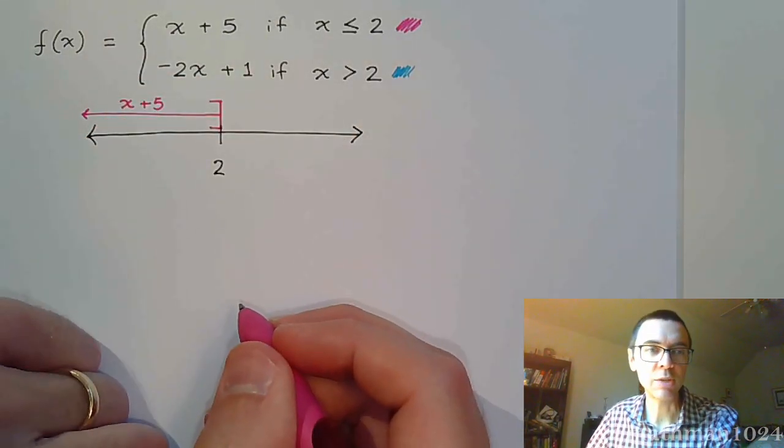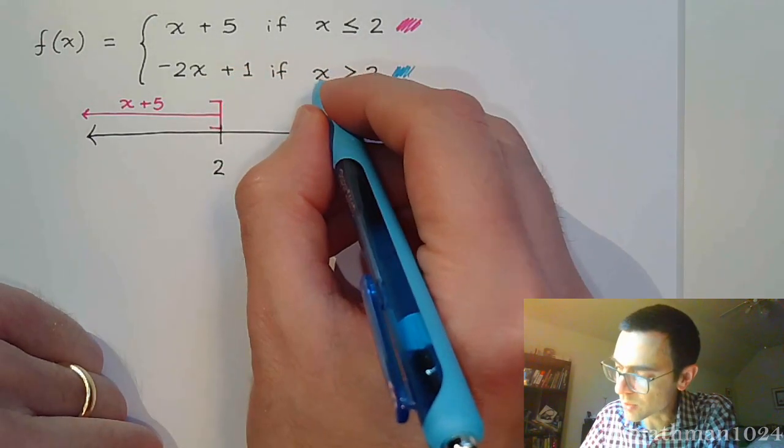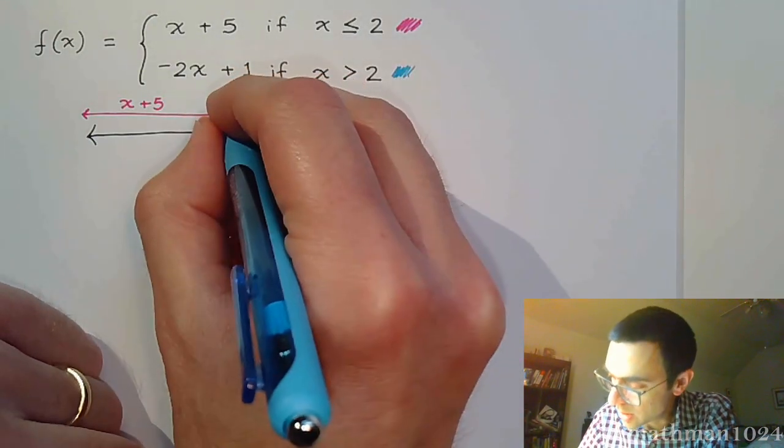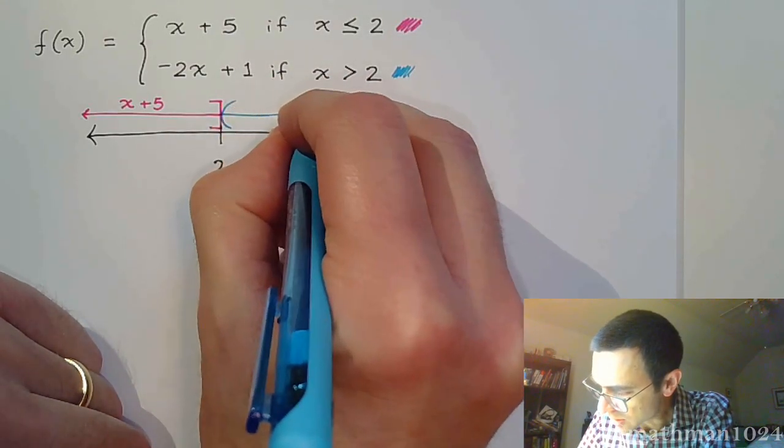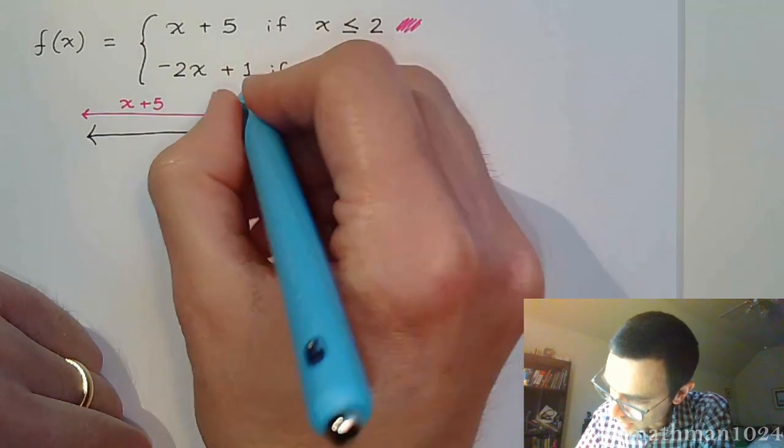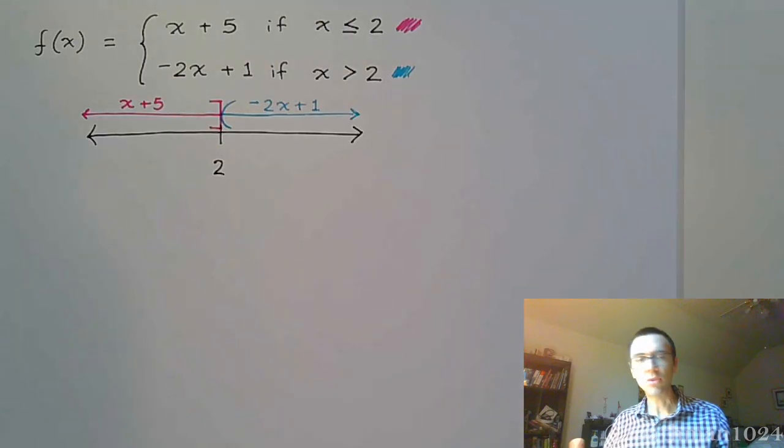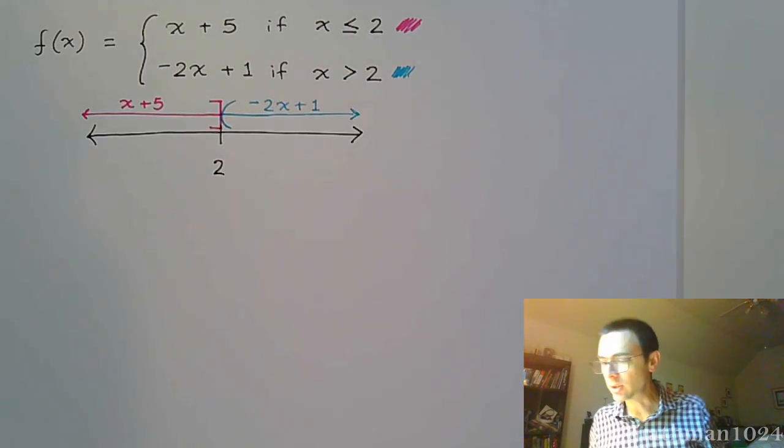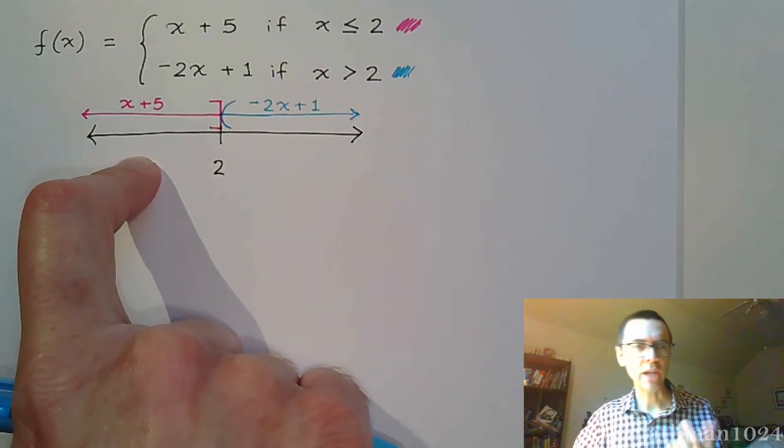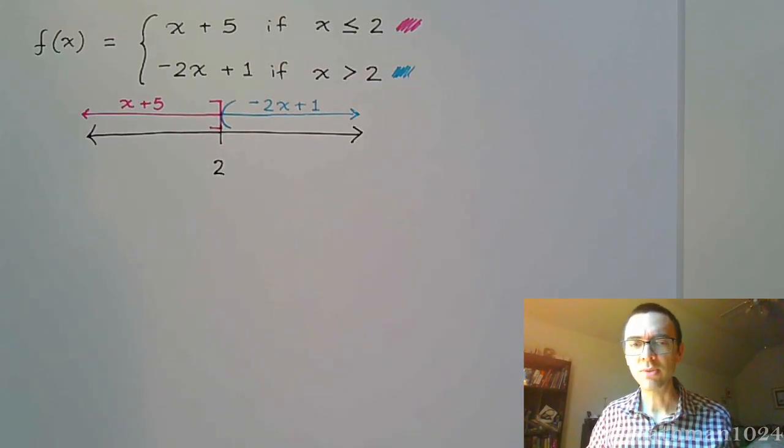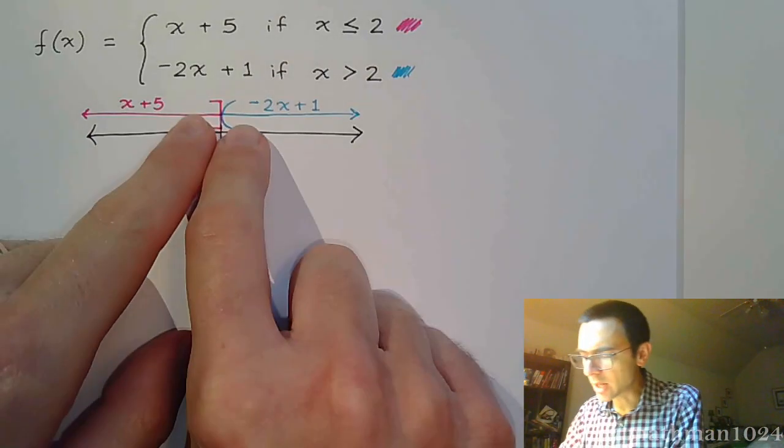So I could put a bracket here, and I'm going to the left, and so that's going to indicate those values that we get plugged into x + 5. And the other part, -2x + 1, is when x is greater than 2. So greater than 2 would be parentheses here going out to the right. And so that's -2x + 1. And again, the reason I like to do this number line is because you can look at any number here that's on the number line and know exactly where it's supposed to go with the piecewise-defined function. There's never going to be any overlap. These guys are going to have their own separate regions.